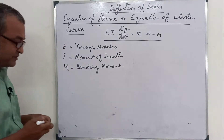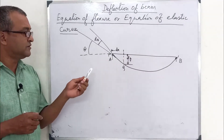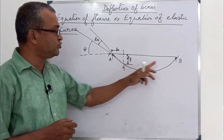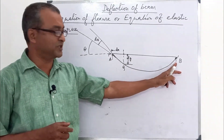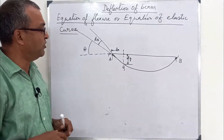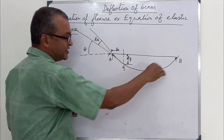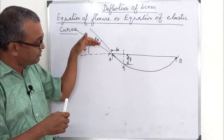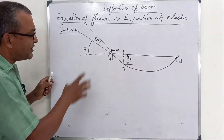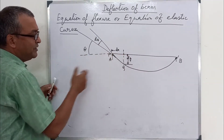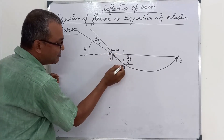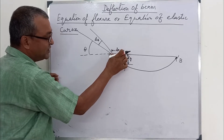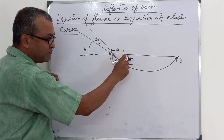Let us consider a simply supported beam. Simply supported beam means there is a simple support — a hinged or edge support at A or B. Consider a small element of the beam. The element has a horizontal projection dx, arc length ds, and deflection dy.